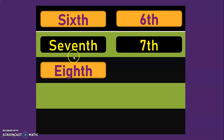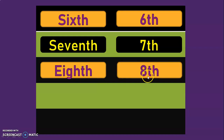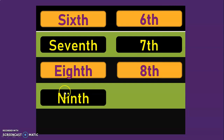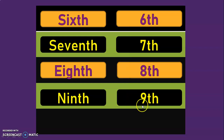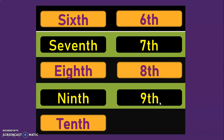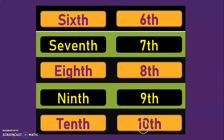The next ordinal number is eighth — E-I-G-H-T-H. The numeral corresponding to this is 8 followed by TH, giving us 8th. The next ordinal number is ninth — N-I-N-T-H. The numeral corresponding to this is 9 followed by TH. And the last ordinal number we are going to learn is tenth — T-E-N-T-H. The numeral corresponding to this is 10 followed by TH, giving us 10th.